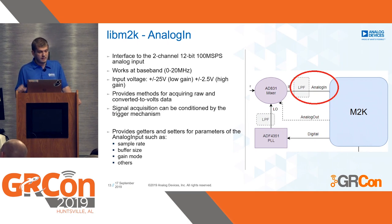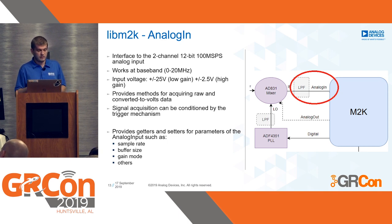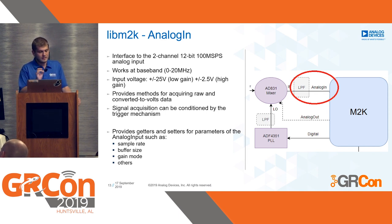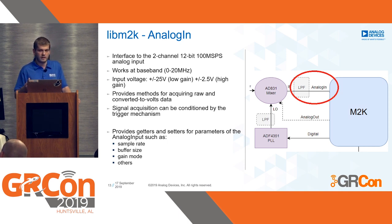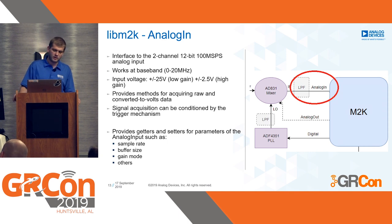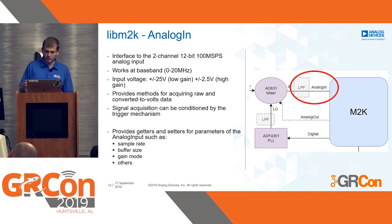The AnalogIn class is the interface to the two-channel, 12-bit, 100 mega samples per second analog input. This analog input works at baseband — this is not an RF transceiver, it's more of an instrumentation device. It has an input voltage of plus/minus 25 volts in low gain and plus/minus 2.5 volts in high gain. With LibM2K, you don't have to worry about converting from raw values to volts, because all those conversion methods are provided for you. You can use this analog input in your radio project to capture analog data and do anything you want with it.